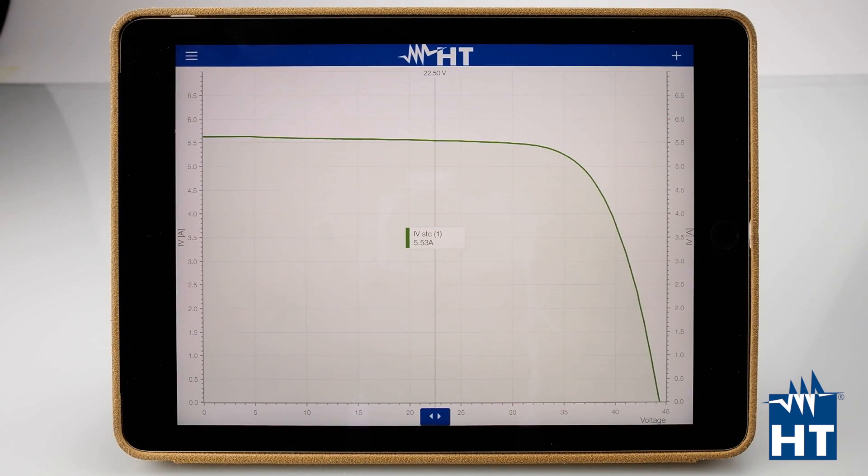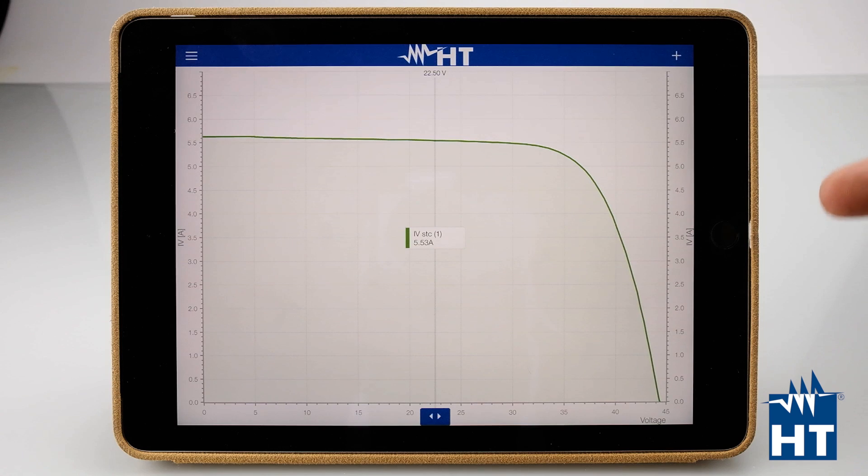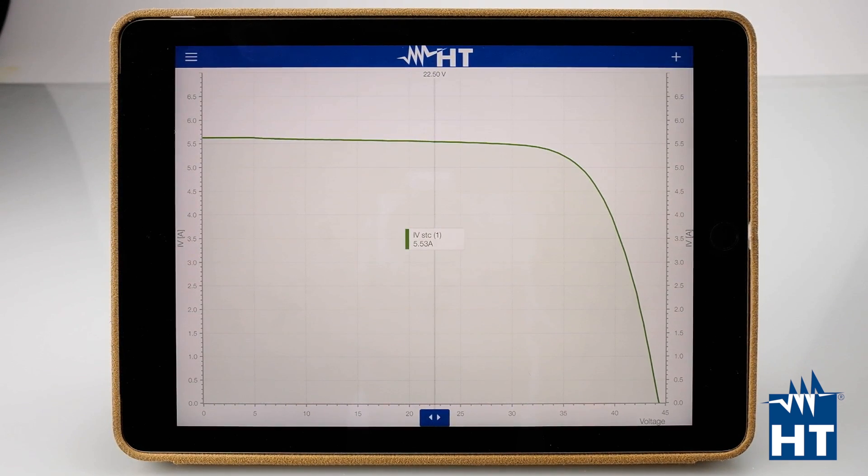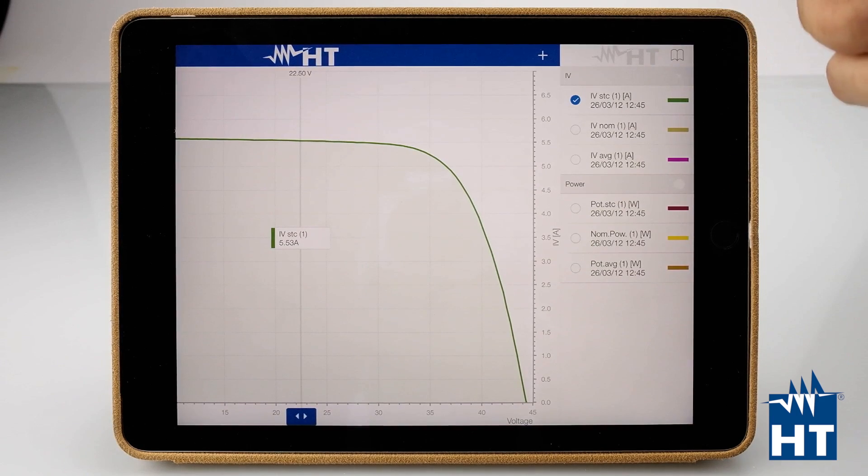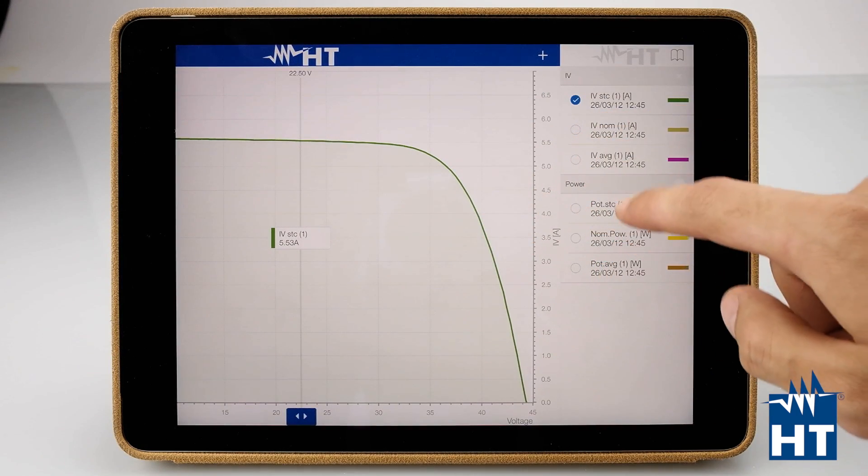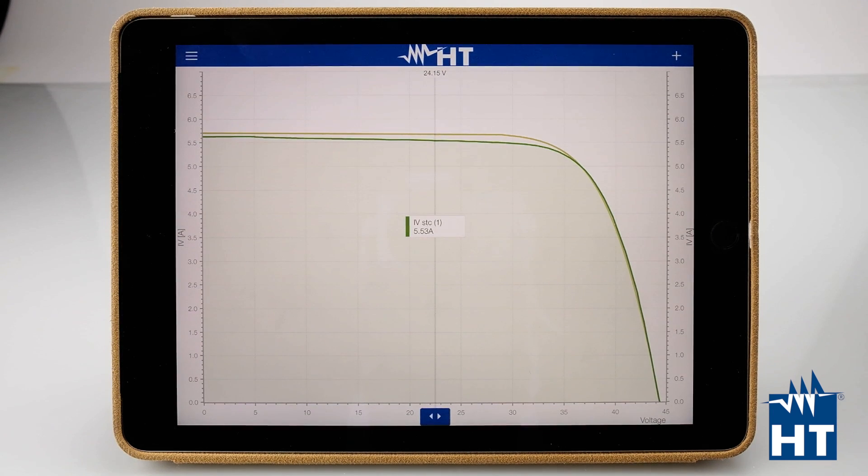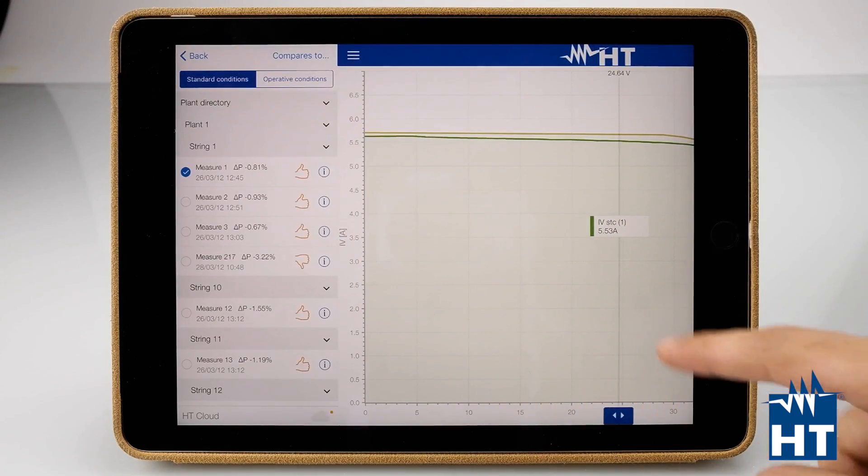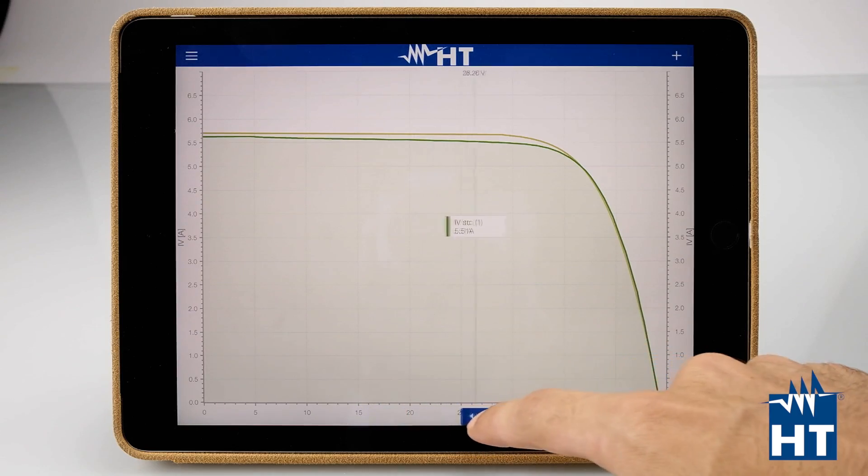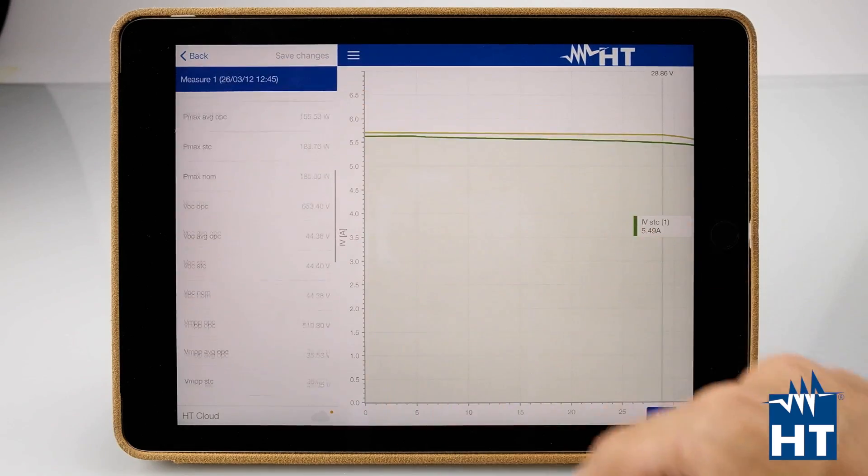IV STC is our IV curve measure already compared with the standard condition. So the calculation compared with the manufactured data is already done by the app. Here we have STC, which is this graph. Then we can put in the graph IV nominal, which is the nominal curve from the manufacturer without any calculation. As you can see, here we have some delta, some difference, that we can find values. We can move the cursor here and press I for info. Here we have all the data about the measure.